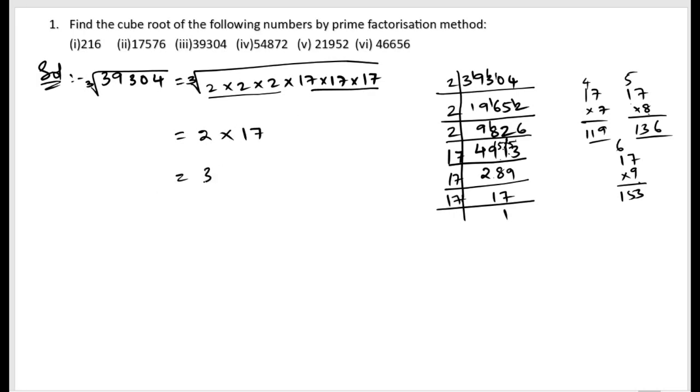2 times 17 is 34. So therefore, the cube root of 39304 is 34.